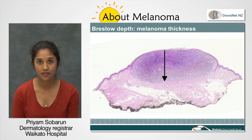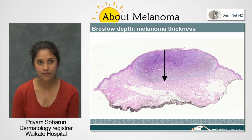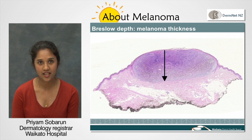The thinner the Breslow depth, the better the outcome. These three features are very important and form part of the T in staging of a melanoma.